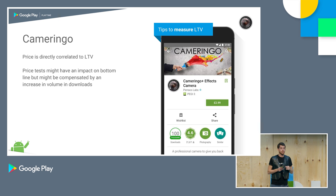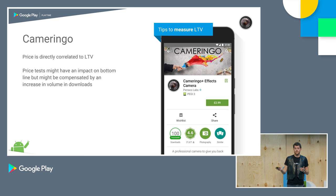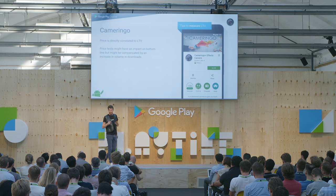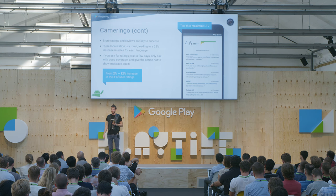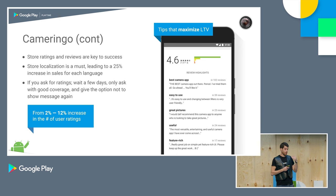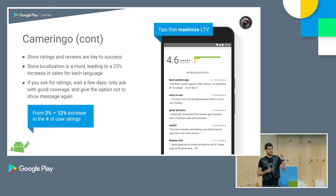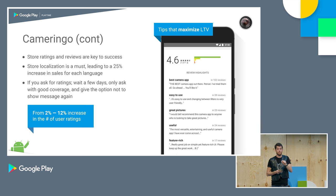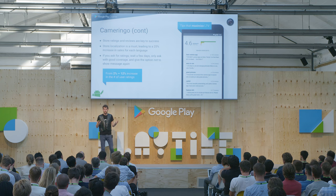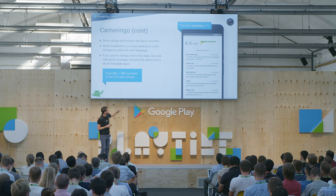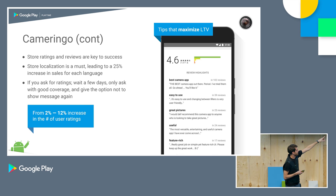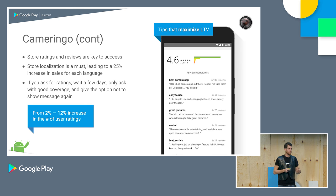They test price points like £2.99 using price elasticity testing methods and indices like the Big Mac Index or purchasing power indexes, in order to set the right price per market. For Camaringo, maximizing lifetime value comes down to two main things: store ratings and reviews, and store listing. When the moment of truth comes and a user is supposed to buy the app before ever having seen it, you need good ratings and reviews that give direct feedback — like 'best camera app out there, period, I've tried them all, go ahead and buy it.'